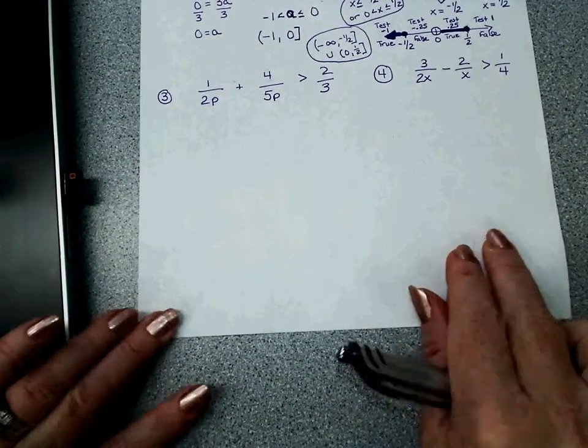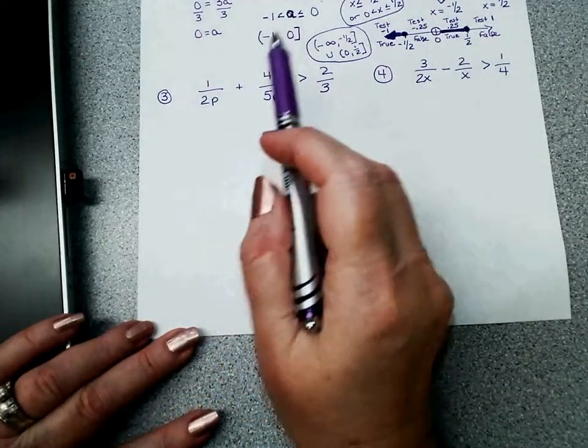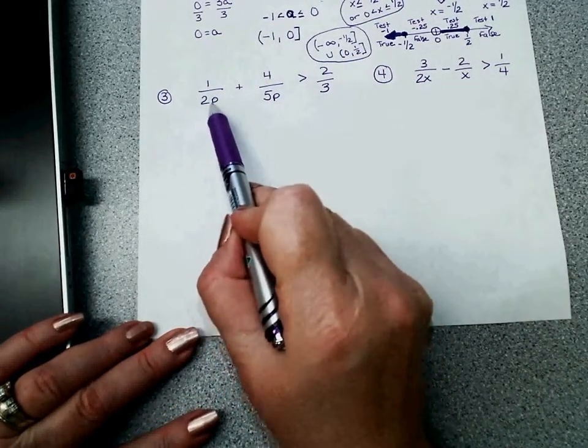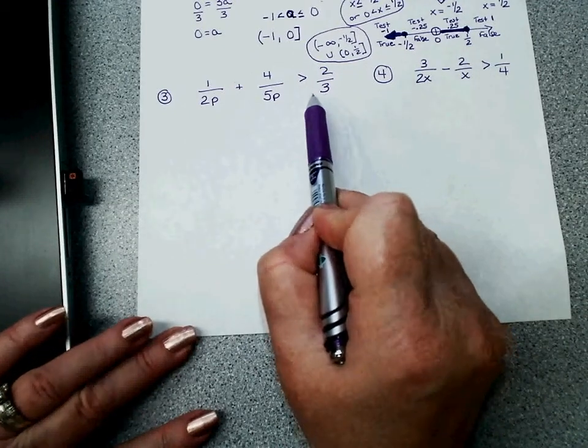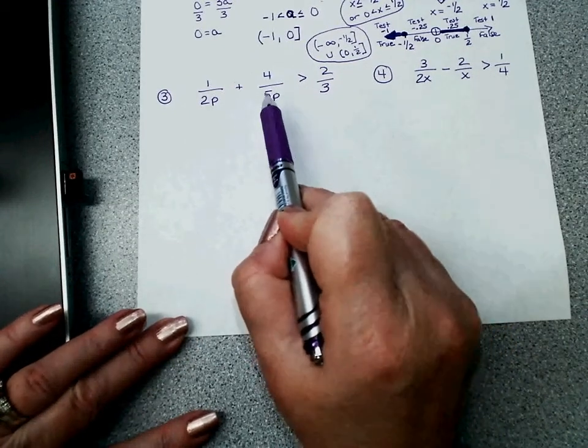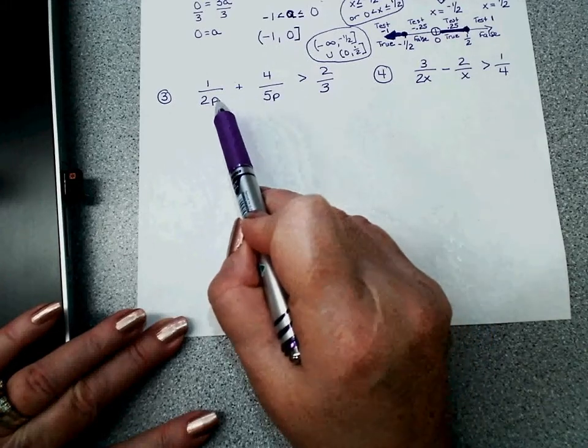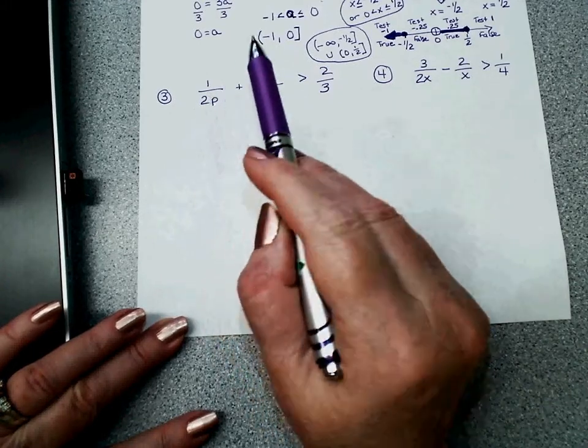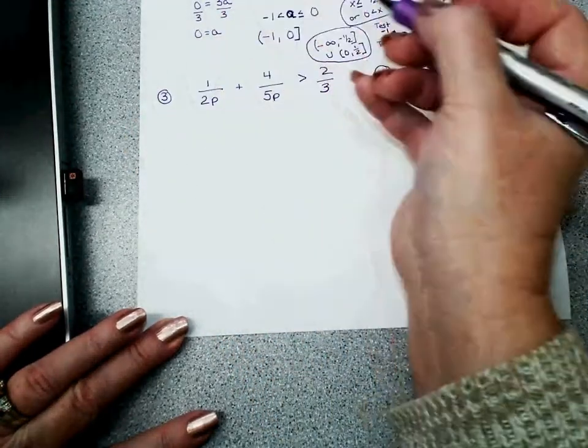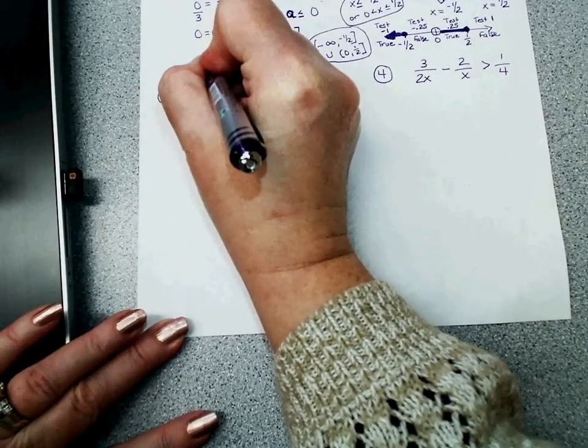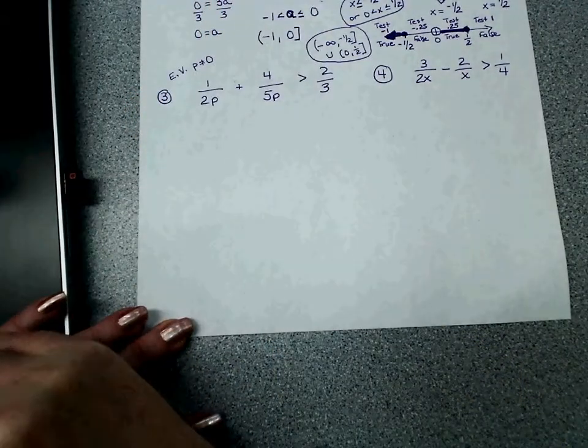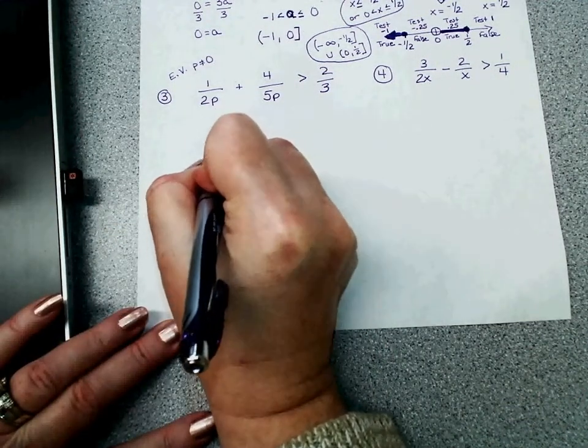So first thing, excluded values. 2p, 5p, and 3. No excluded values here because there's no variable. The only thing that would make this 0 is 0. The only thing that would make this 0 is 0. So my excluded values, which I'm going to write right here, are p equals 0.